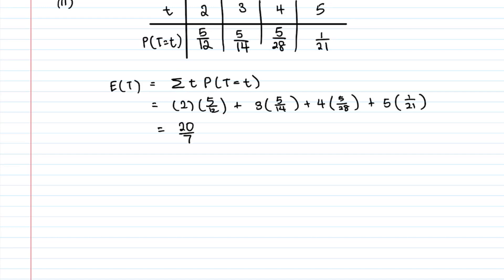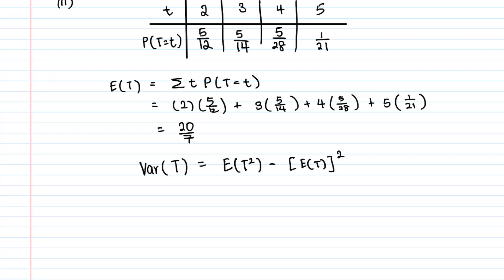Adding those together gives E(T) = 20/7. To find Var(T), we use the formula: Var(T) = E(T²) − [E(T)]². We first need to find E(T²), which requires working it out term by term.